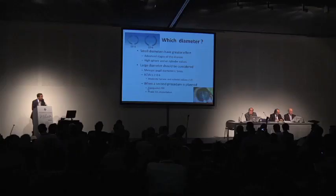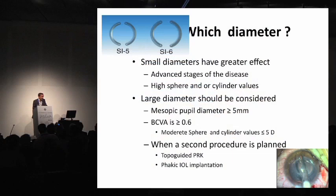How do we select the ring that we implant? The selection is based, of course, on keratometry, astigmatism, refraction, asphericity, and the type of ectasia, with variation according to ring thickness and arc.